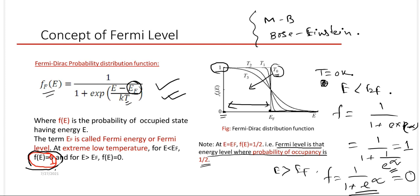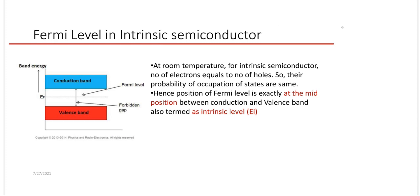Now, the position of the Fermi level in intrinsic and doped semiconductors. In an intrinsic semiconductor, no impurities are added, so n equals p, both equal to the intrinsic carrier density ni. The Fermi level is exactly at the mid-position of the band gap, referred to as Ei, the intrinsic level. For a pure semiconductor, Ei equals Ef.